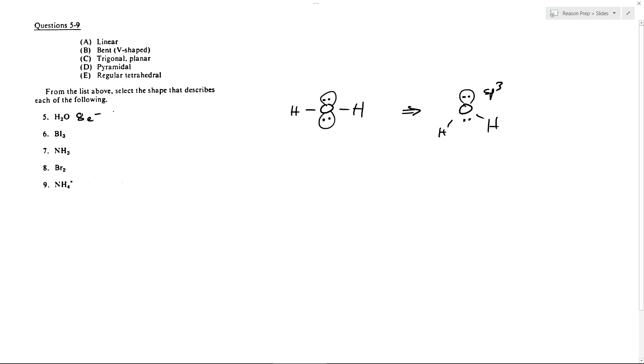It's just that we have these two pairs of unpaired electrons that take up two of the spots that might normally be taken up by bonds. So this is not linear, this is going to be bent. And so this would be bent, and so therefore five would be B.